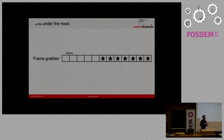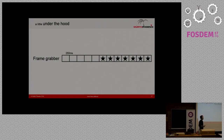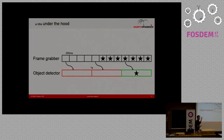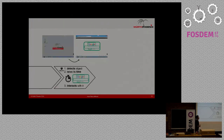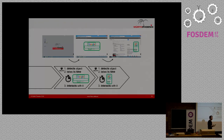Second, Alivix can measure application transactions. The engine has two threads: one dedicated to the frame grabber, which takes frames from the screen at a set pace — for example every 250 milliseconds. The other thread, the object detector, takes the first available frame from the grabber at a lower frequency, such as once per second. When it detects the object on screen, the measurement system delivers the final transaction performance.